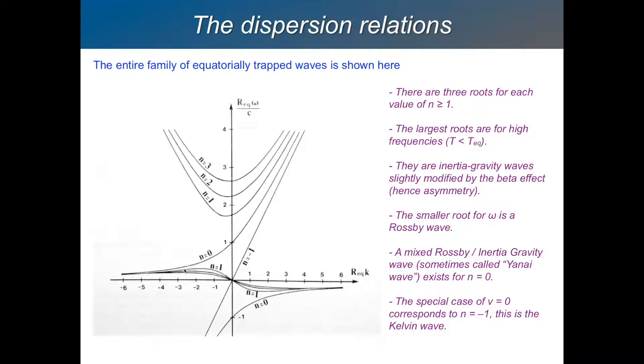And then this third solution for n equals 1 is this. And what does that remind you of? What do you think that is? What kind of wave is that? There's a dispersion relation like that propagating towards the west. Yeah, it's a Rossby wave. It's an equatorial Rossby wave.